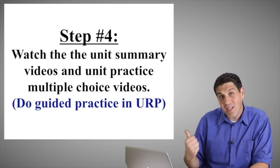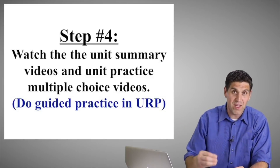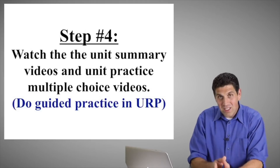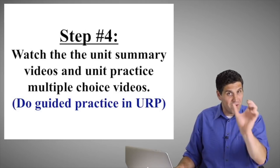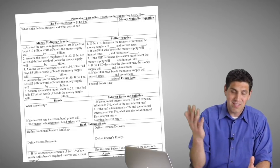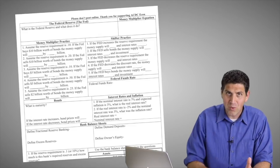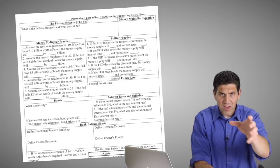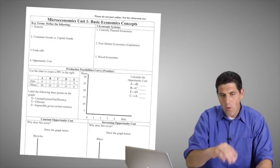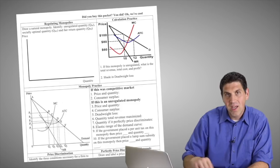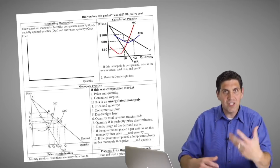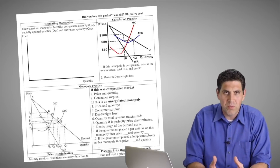Step four: watch the unit summary videos and unit practice multiple choice question videos I made for each unit. These come along with the ultimate review packet — you've got to get the packet to watch these videos. Inside the packet, I also have guided notes, which are short summaries of each unit with practice questions built in. You watch a video and fill out sections covering topics like the money multiplier or drawing a monopoly graph. As you watch the video and fill out the guided notes, it'll help you stay engaged so you're not just watching and forgetting what you're learning.